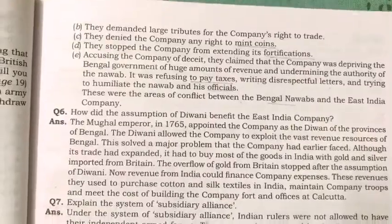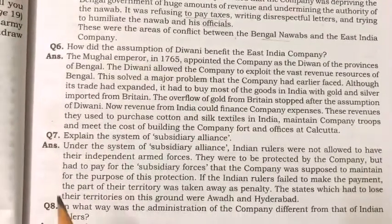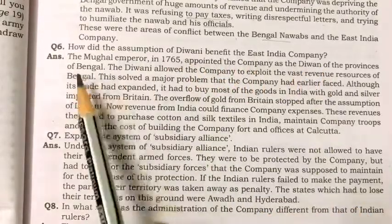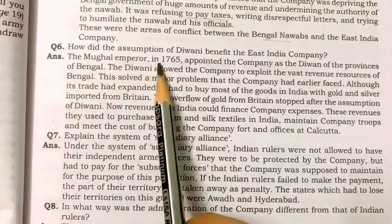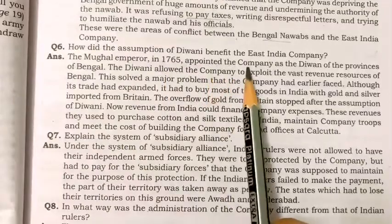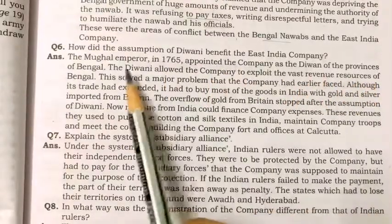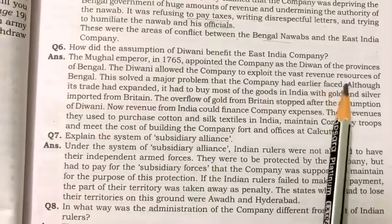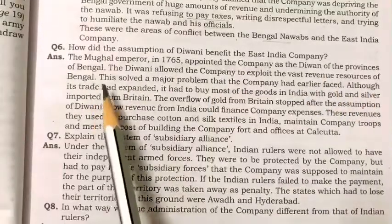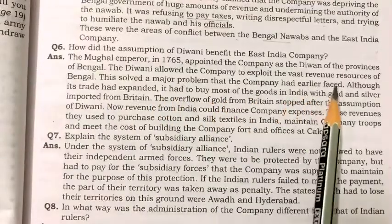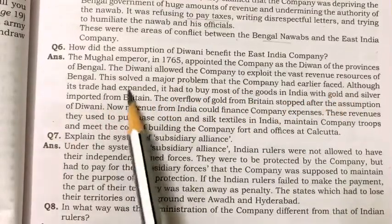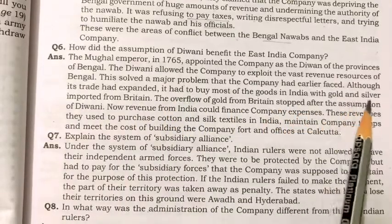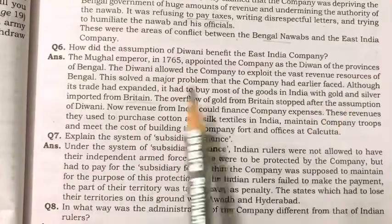Question number six: how did the assumption of Diwani benefit the East India Company? The Mughal emperor in 1765 appointed the company as the Diwan of the provinces of Bengal. The Diwani allowed the company to exploit the vast revenue resources of Bengal, solving a major problem — previously the company had to buy most goods in India with gold and silver imported from Britain.